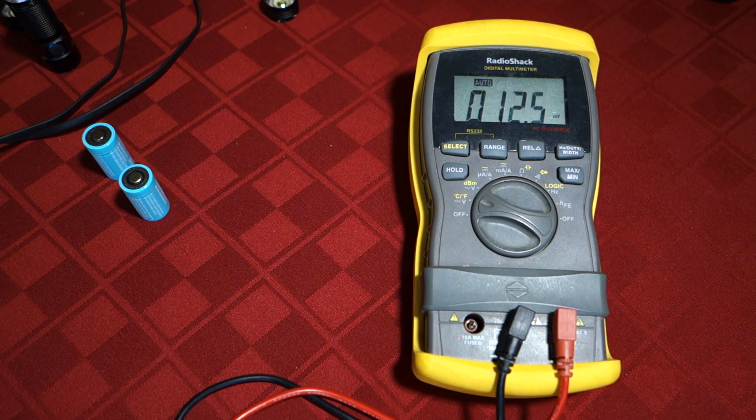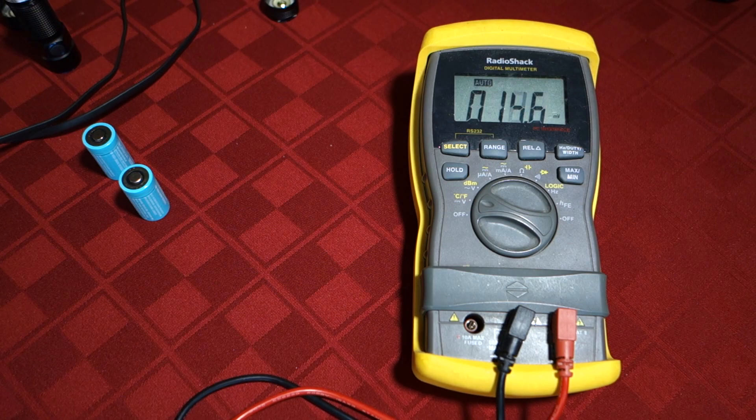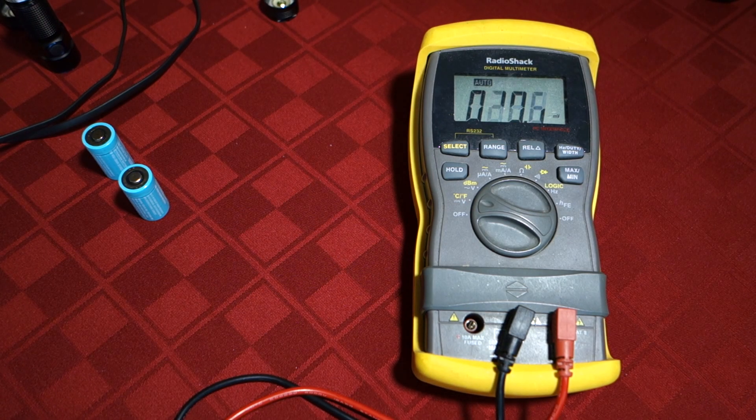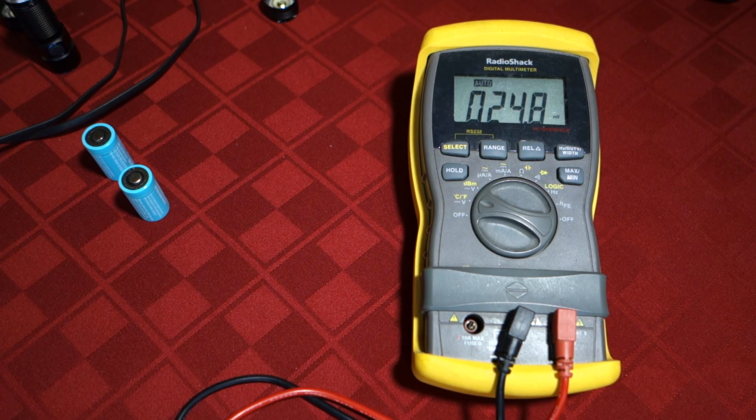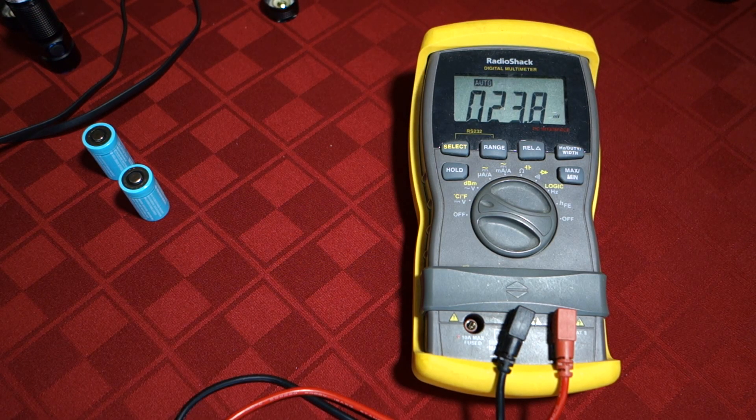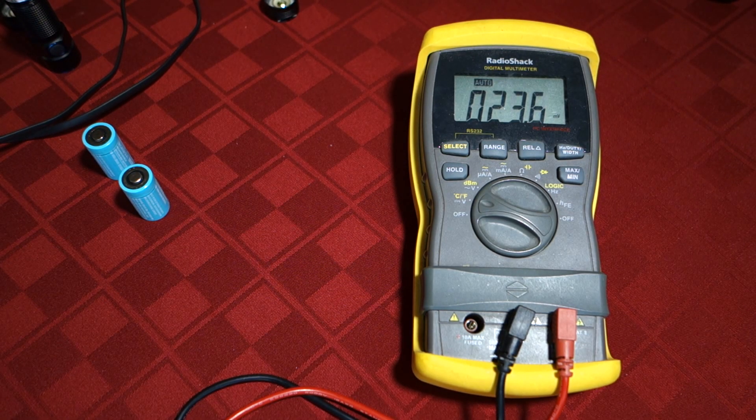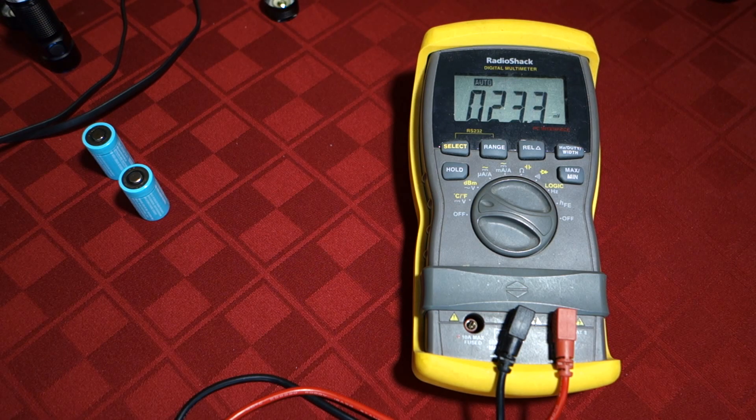So again, if you're curious and you have a multimeter, you might want to just pop open your flashlight, whether it be an S1R, S2R or whatever, or any other future light that uses this magnetic charger and just check what it's terminating at.